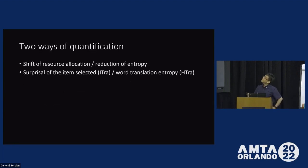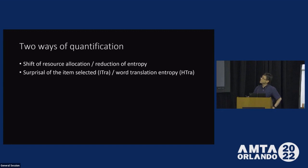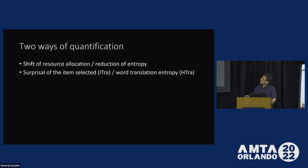In very short terms, we have two ways of quantification theoretically. One has to do with resource allocation and another is the entropy value between two mental states. I will argue that this equals the surprisal of the item which is eventually selected and approximated by ITRA, whereas the reduction of entropy could be approximated by HTRA. But before doing so, I will briefly review the concept of surprisal and how it describes cognitive load in psycholinguistics.